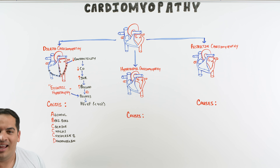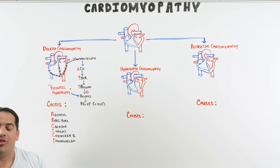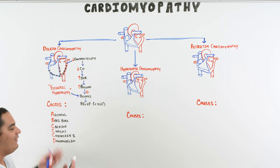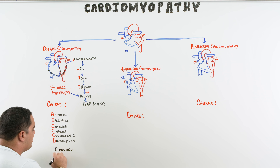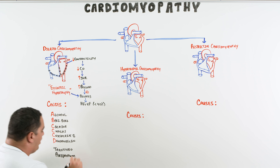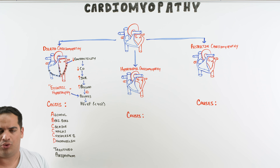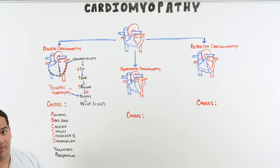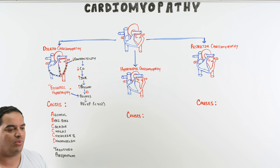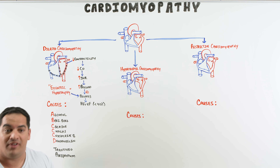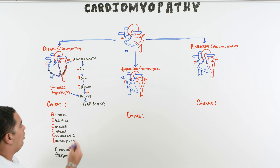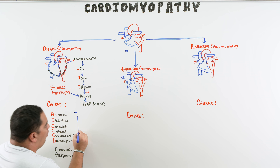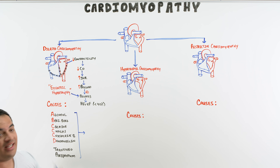These are some of the offending agents — the exact mechanism by which they reduce contractility isn't completely known, but they do. Two additional causes to remember are takotsubo cardiomyopathy — triggered by a massive emotional or physical stress, sometimes seen with intracranial hemorrhages causing a sympathetic storm — and peripartum cardiomyopathy, occurring around the time of pregnancy or delivery. All of these reduce contractility, leading to dilated cardiomyopathy.